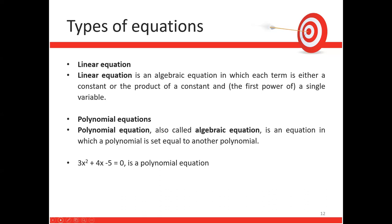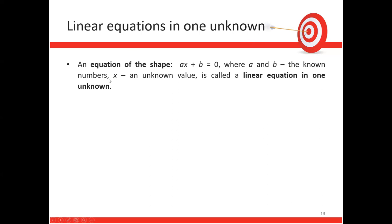Types of equations: A linear equation is an algebraic equation where each term is either a constant or the product of a constant and the first power of a single variable. A polynomial equation (also called an algebraic equation) is an equation in which a polynomial is set equal to another polynomial, for example 3x² + 4x − 5 = 0. A linear equation in one unknown has the form ax + b = 0.